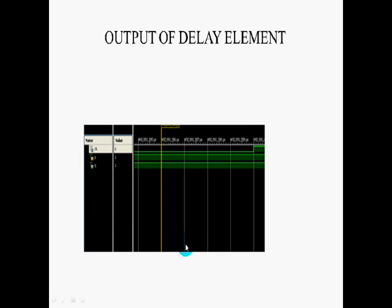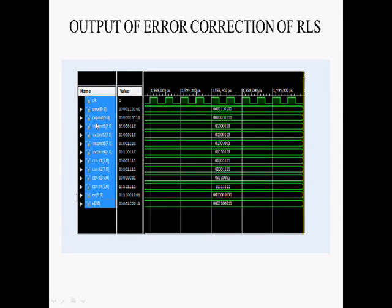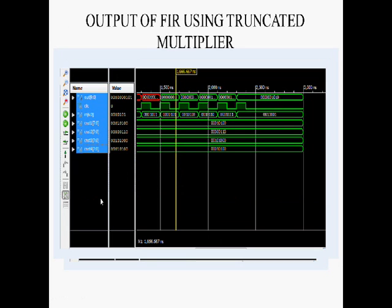This is the output of the delay element. By providing the clock signal as 0 or 1, this is the corresponding output value. This is the weight updation of RLS — the clock element is provided with reset value 0 and elements 0 to 7 are taken as input. W of 7 of 0 indicates the weight of the values. These are the iterations I1, I2, up to I8. This is the output of the error correction block. This is the exponential expected output and the constant value. This is the output of FIR using the truncated multiplier — these are the constant values using the truncated multiplier.